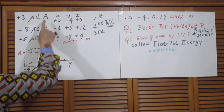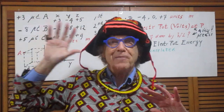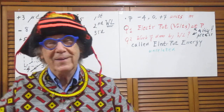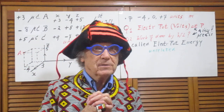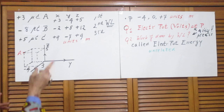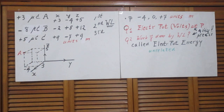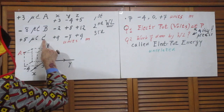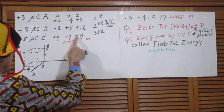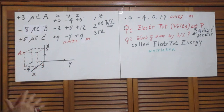So now A and B are in my reference frame. I go again outside my reference frame a kilometer away, and I bring in a third charge. The third charge has a value of plus five microcoulombs, and I put it at location C: plus nine, minus seven, plus nine. That's the third charge and now I stop.